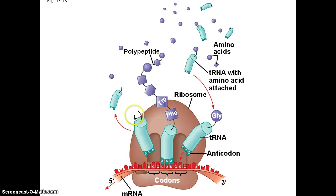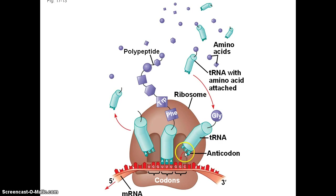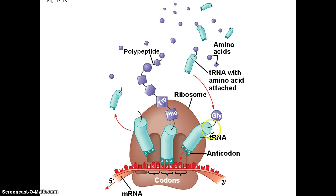The beauty of translation. In the last segment, we looked at how specific tRNAs can carry amino acids to the ribosome, and when specific anticodons match up with codons on the messenger RNA, the growing polypeptide is attached to the existing amino acid on the newly joined tRNA.